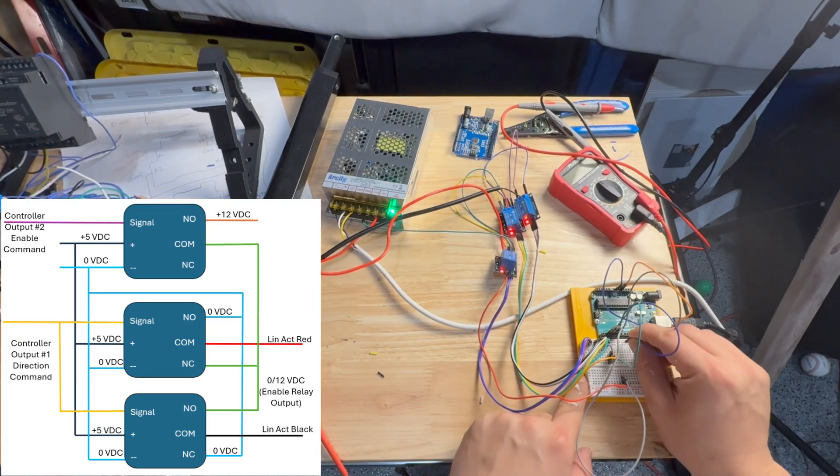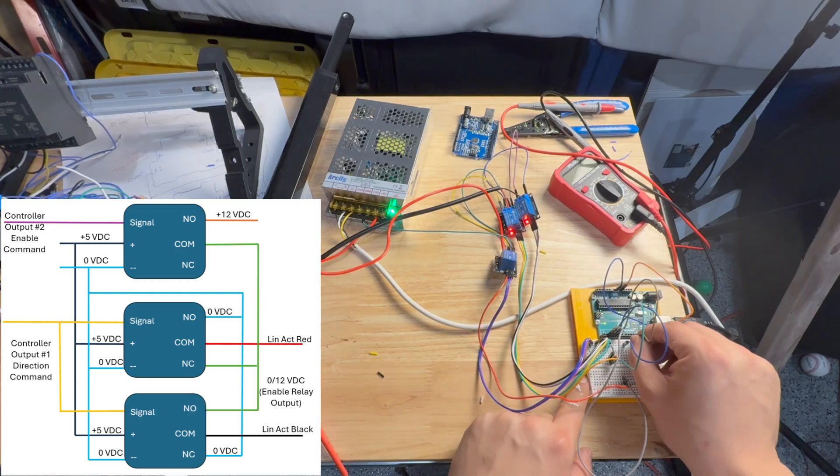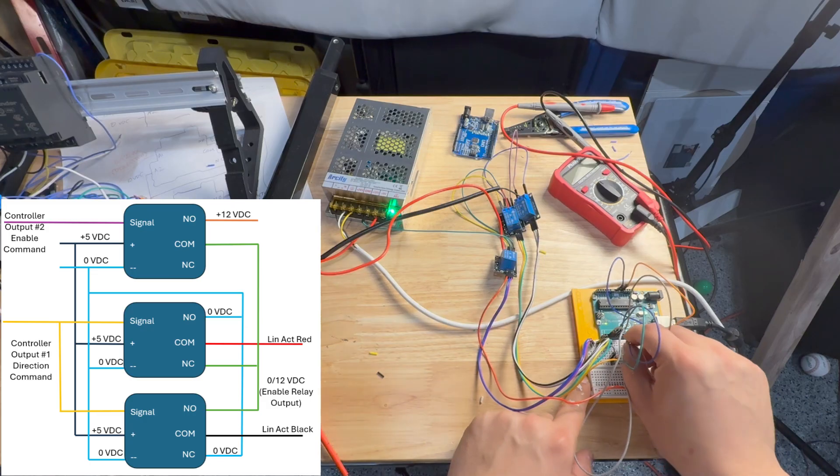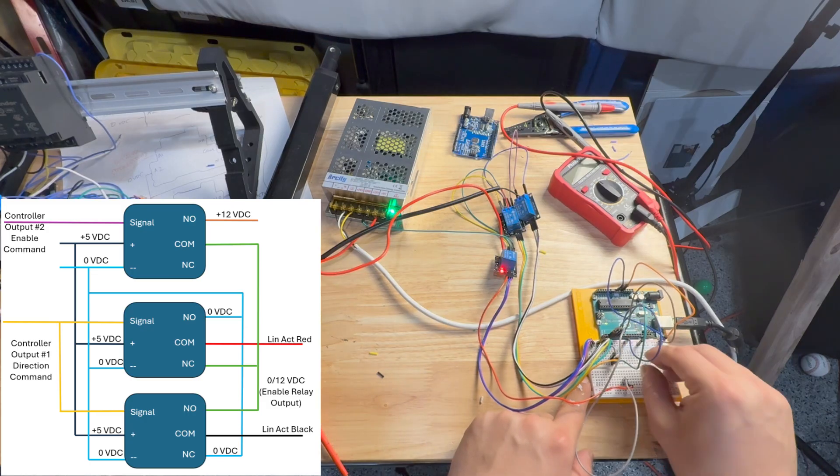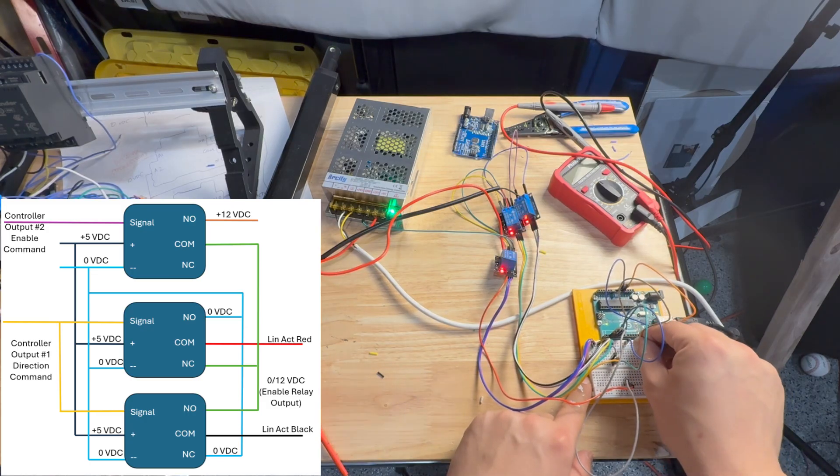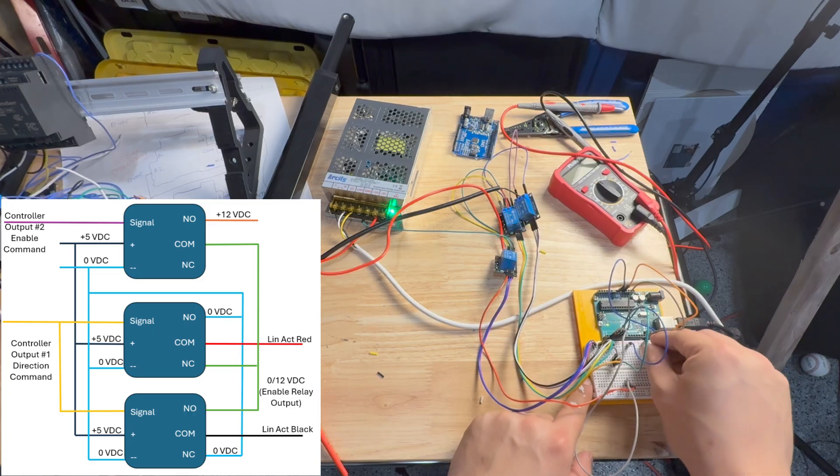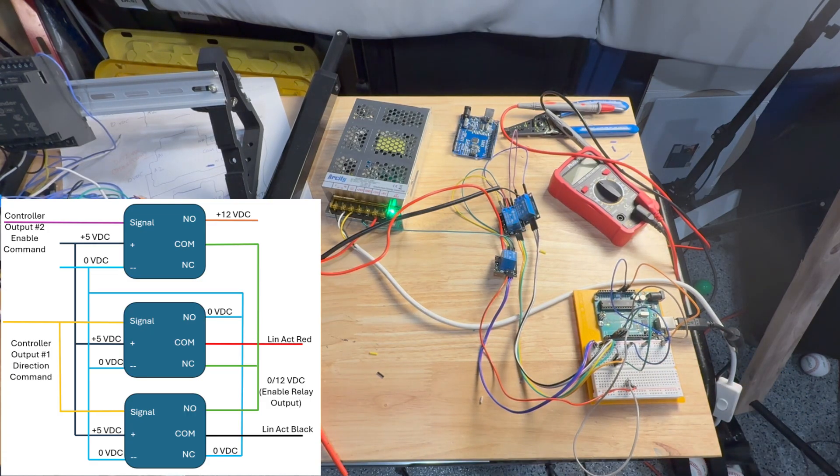This wiring is definitely slightly past beginner and more towards intermediate, but it makes whatever logic you're writing to control the actuator very simple. Basically, turn one output on when you want the linear actuator moving, and then switch a second output on or off to change the direction that it's moving in, and these electronic switches called relays will do the rest.